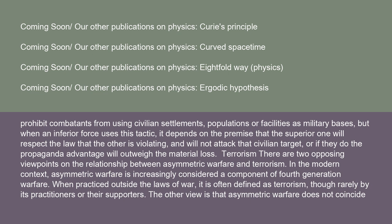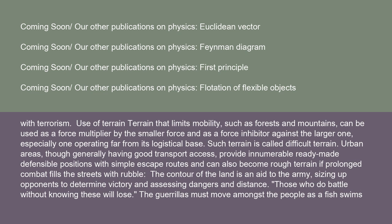There are two opposing viewpoints on the relationship between asymmetric warfare and terrorism. In the modern context, asymmetric warfare is increasingly considered a component of fourth-generation warfare. When practiced outside the laws of war, it is often defined as terrorism, though rarely by its practitioners or their supporters. The other view is that asymmetric warfare does not coincide with terrorism. Use of terrain that limits mobility, such as forests and mountains, can be used as a force multiplier by the smaller force and as a force inhibitor against the larger one, especially one operating far from its logistical base.